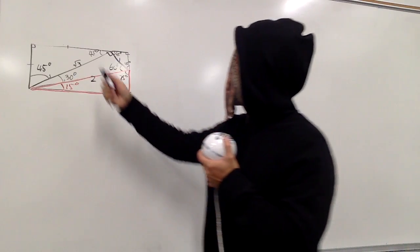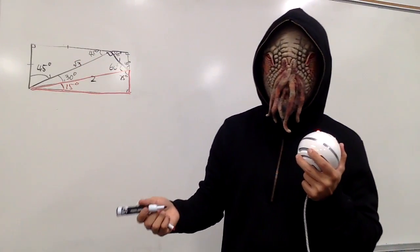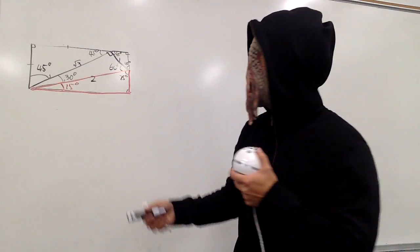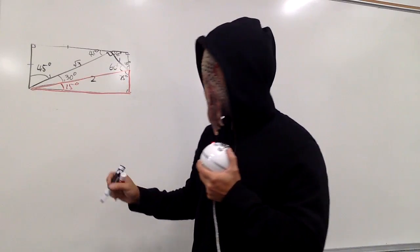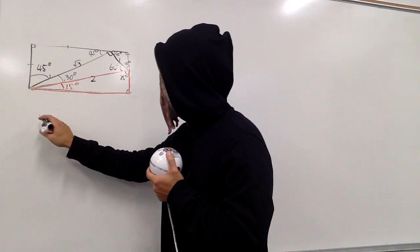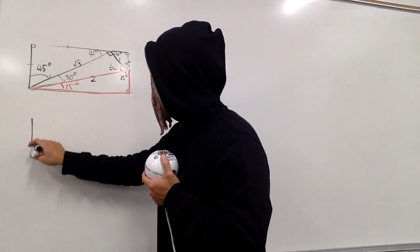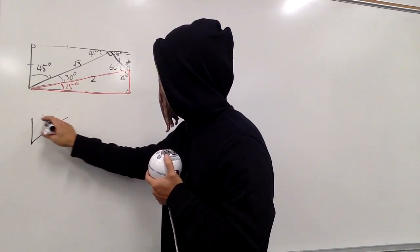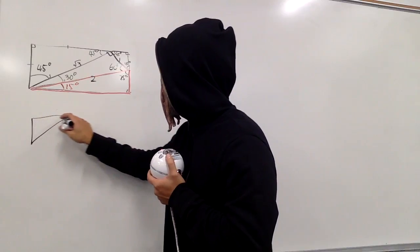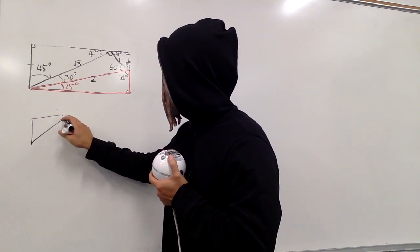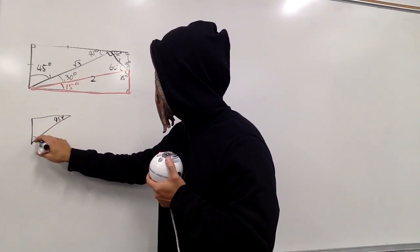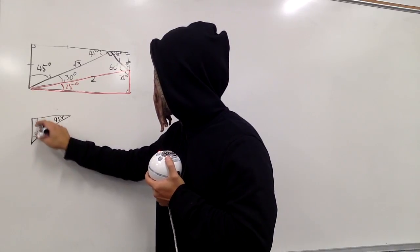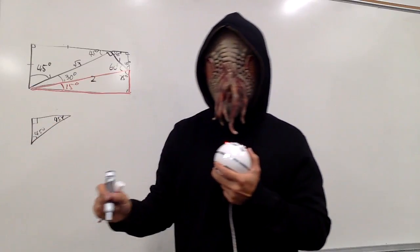What are these lengths? Can we figure that out? Sure we can, because that's a special right triangle as well. Recall the 45-45-90 special right triangle. The ratio of the sides in simplest form is 1, 1, square root of 2.